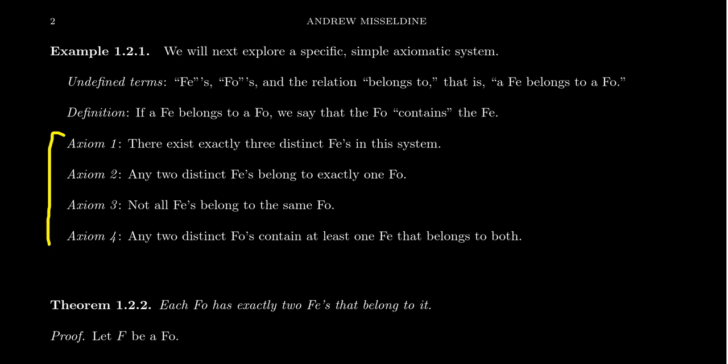Next, we're going to introduce four axioms for this axiomatic system. These are statements that are fundamentally true about our undefined and defined terms. They're true because I say they're true, and that's all there is to it. We can have quibbles about whether they should be true or not, but for this logical system they're true statements. Everything we'll prove as a theorem is derived from these axioms, so the truth of the theorems is contingent upon the truth of the axioms, which as axioms we're accepting to be true.